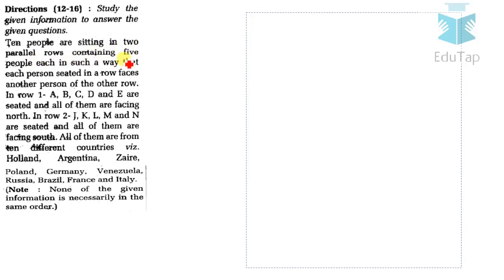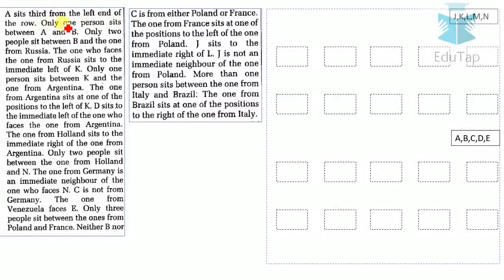Directions for questions 12 to 16: 10 people sit in two parallel rows of 5, each person facing the other row. In row 1, A, B, C, D and E are seated facing north. In row 2, J, K, L, M and N are seated facing south. They are from Venezuela, Argentina, Zaire, Poland, Germany, Russia, Brazil, France and Italy. A sits third from the left end of row 1.